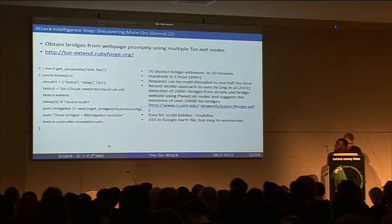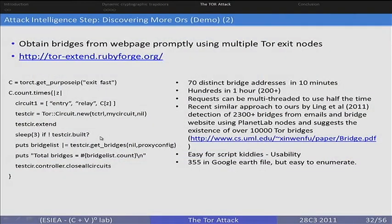Normally, it's possible to get just three bridges at a time from any IP address you use. Then, probably after an hour or so, you might be able to get another three, but you get only three at a particular point. So with this library, you'll be able to request more bridges using Tor exit nodes. We were able to obtain about 70 distinct addresses in 10 minutes, and over 200 in just one hour. Our goal was not to get all the bridges — we just tried — and you actually obtain over 200 bridges within the time using this short script.